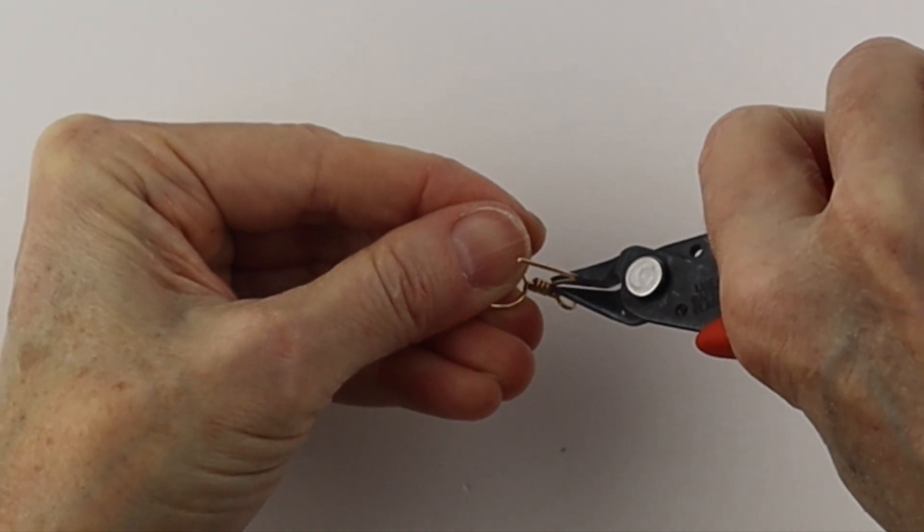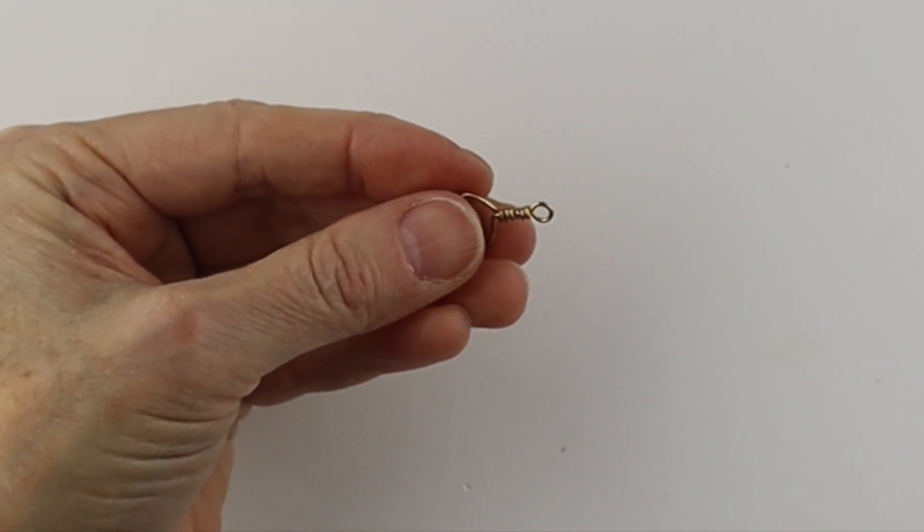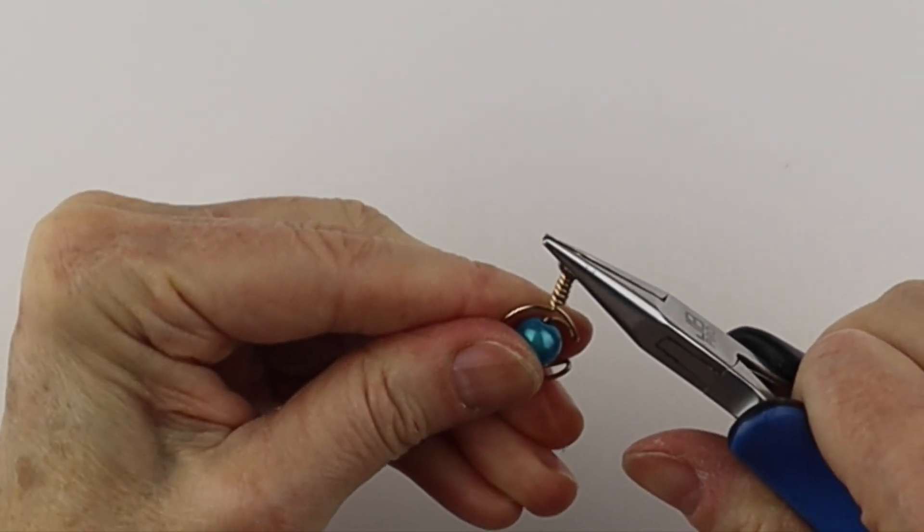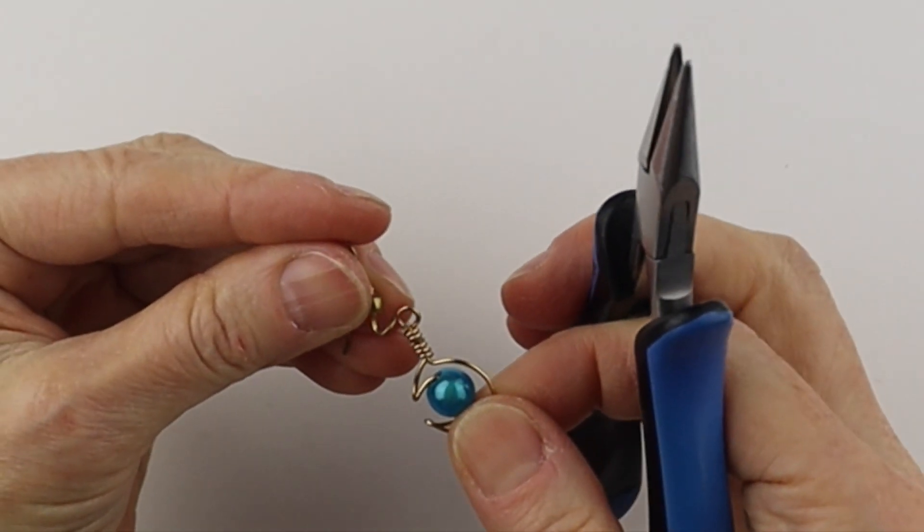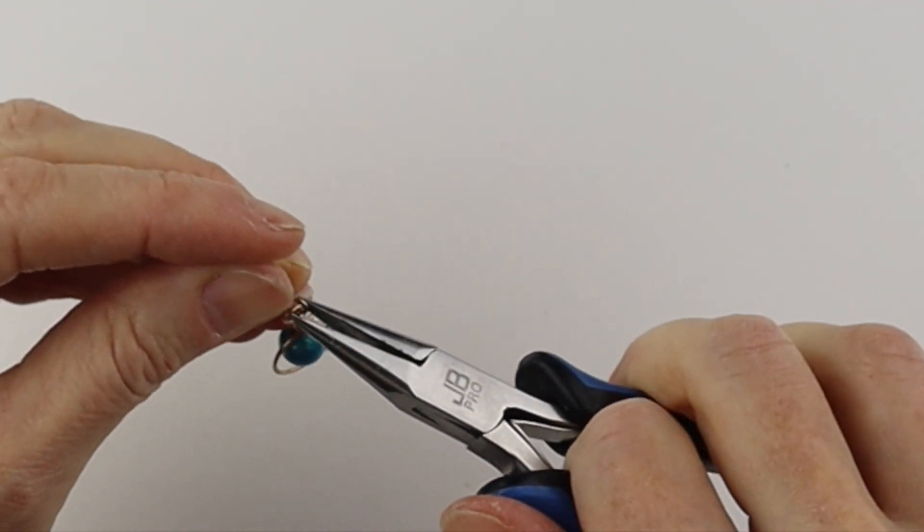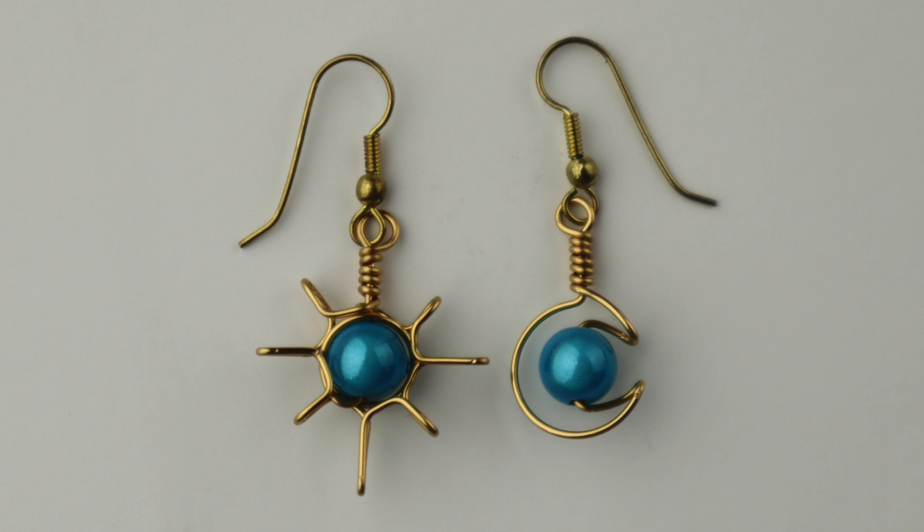And we're going to clip it, pinch that end in so it's flush. And then we're going to take the earring hook and stick that on there. And there you have some beautiful sun and moon earrings made with brass wire and turquoise miracle beads.